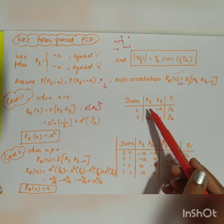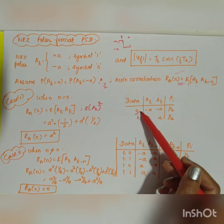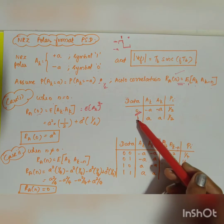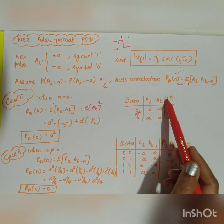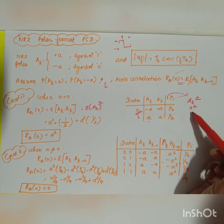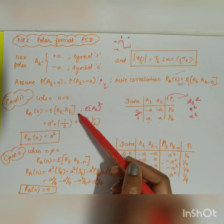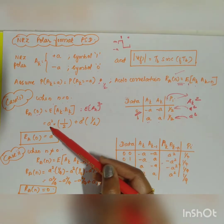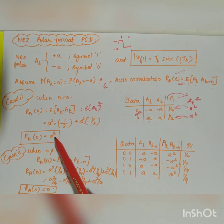There are two combinations: when the symbol is 0, a_k = -a, giving (-a)×(-a) = a²; and when the symbol is 1, a_k = +a, giving a×a = a². In both cases, a_k² = a². The expectation (autocorrelation) is therefore a² × (1/2) + a² × (1/2) = a². So R_a(0) = a².